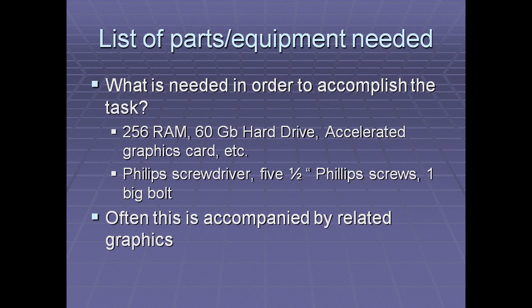The next section after the introduction is a list of parts or equipment needed. This is simply where you state what is needed to accomplish the task. If you're installing something, it might require a minimum of 256 MB RAM, a 60 GB hard drive, a graphics card, etc. If you need physical tools, you might list a Phillips screwdriver, five half-inch screws, one large bolt, and so on. Any set of instructions will have something like this, and they're often accompanied by graphics.